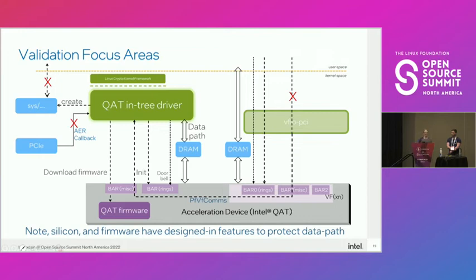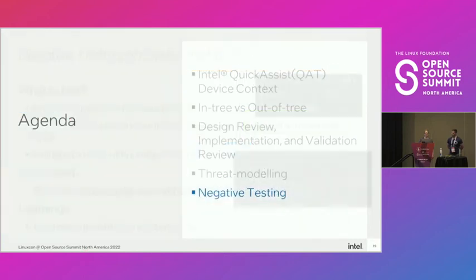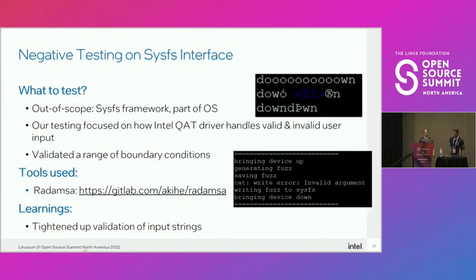Adam is going to talk about some of the testing tools we used. We focused on three areas: SysFS — making sure nobody could cause a denial of service by writing bad data there; the PCI callback interface — ensuring the device would recover as expected; and the PF-VF comms interface, where user space sends a capability query to the kernel driver.